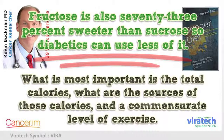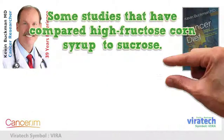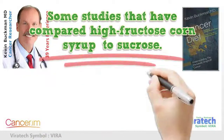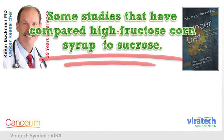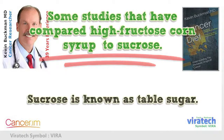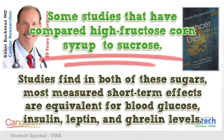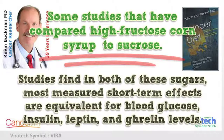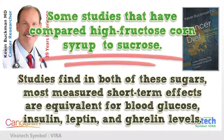Some studies comparing high fructose corn syrup to sucrose — known as table sugar — find that most measured short-term effects are equivalent for blood glucose, insulin, leptin, and ghrelin levels.